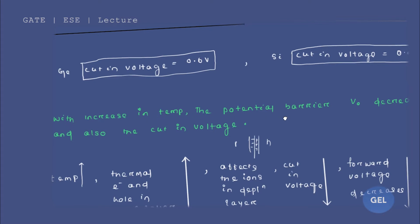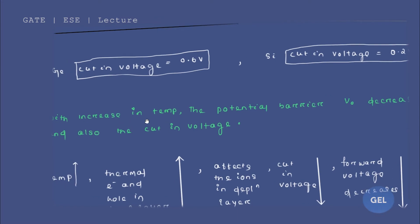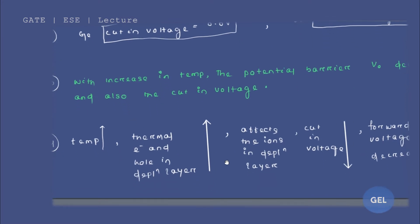Now with increase in temperature, the potential barrier V0 decreases and also the cut-in voltage decreases. So cut-in voltage and V0 both decrease if you increase the temperature — always remember this point, it is very much important for your GATE exam. Another important point: with increase in temperature, the thermal electron and hole pairs in the depletion layer increase. This is your p-type, this is your n-type, and this is your depletion layer. The thermal electrons and holes increase.